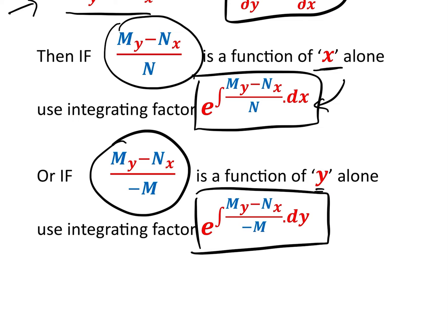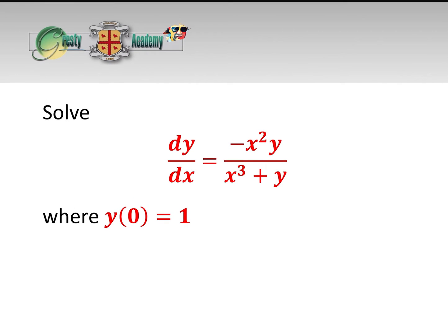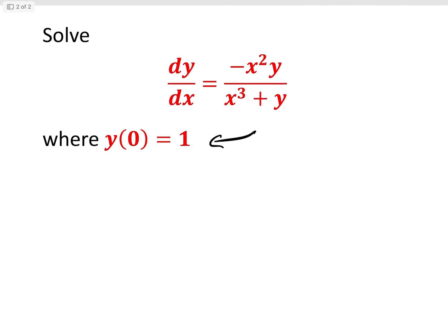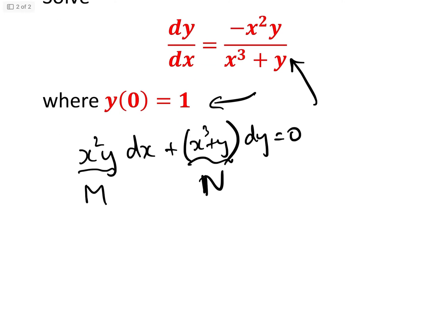So all isn't lost, and these are called non-exact first-order differential equations. Let's do the one in hand. Basically it was: solve dy/dx = −x²y / (x³ + y), with an initial condition of y(0) = 1. The first thing we need to do is put it into the correct form, which is x²y dx + ... All I'm doing is cross-multiplying to get it into the right form, where this will be M and this will be N.